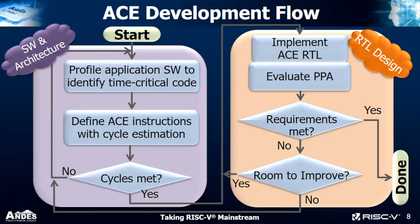Now let's take a look at the ACE development flow. If a designer already knows their software-critical functions, they can skip the first step and start directly defining the custom instruction. Otherwise, the designer profiles the application software to find time-critical code. The next step is to define the ACE instruction to replace those code sections, then profile again and modify the application to accurately evaluate performance and see if it meets the cycle requirements. If not, repeat the steps until the cycle target is met.